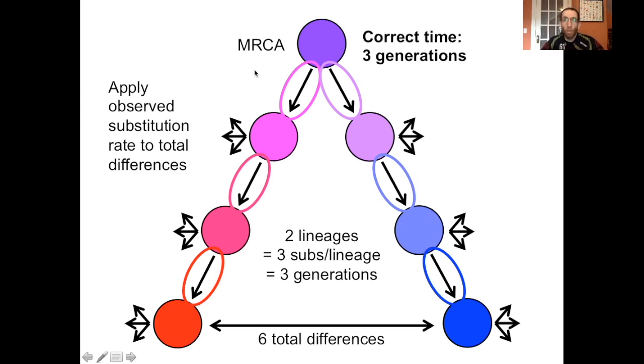So the correct time is three generations. And as you can see in the figure, it's one, two, three generations, that math checks out.